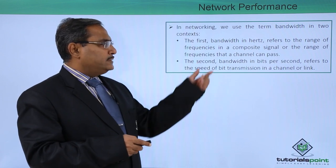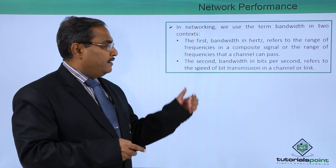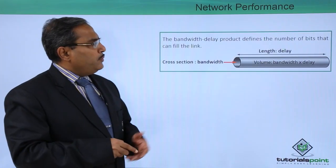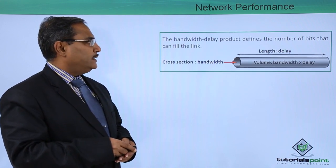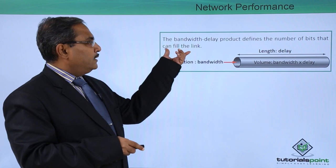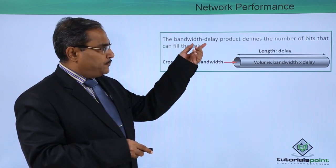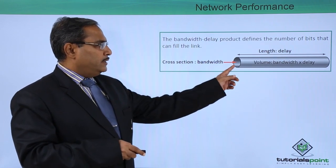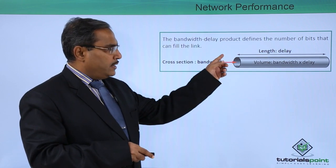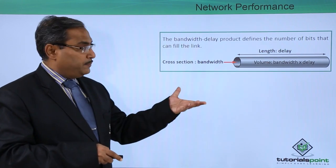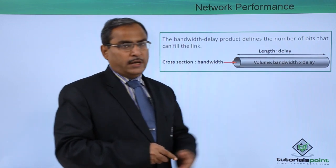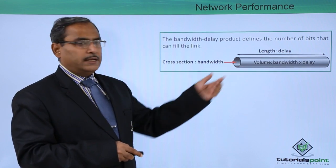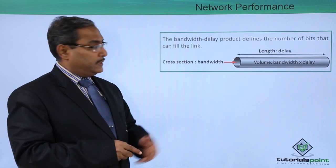In the second context, bandwidth is expressed in bits per second and refers to the speed of bit transmission in a channel or a link. The bandwidth-delay product defines the number of bits that can fill a link. Consider a cross-section where the length represents the respective delay, and the volume represents bandwidth multiplied by delay. In this way, the bandwidth-delay product defines the number of bits that can fill the respective link.